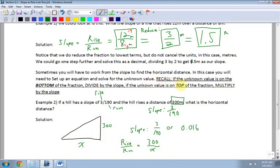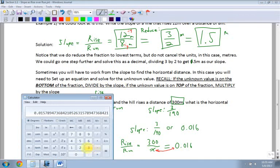And what did I mean up here now? Now I can actually use this. If the unknown value is on the bottom of the fraction, which it is, then I have to divide by the slope. Because I know that 300 over x is going to be equal to my slope of 0.016. And if my value is on the bottom, I switch places with the 0.016, and I divide by my slope. So that's what I meant up here. If the unknown value is on the bottom, it's an easy way to remember, you're just going to divide by the slope. So I take 300, and I divide by 0.016, and I get a distance of 18,750.